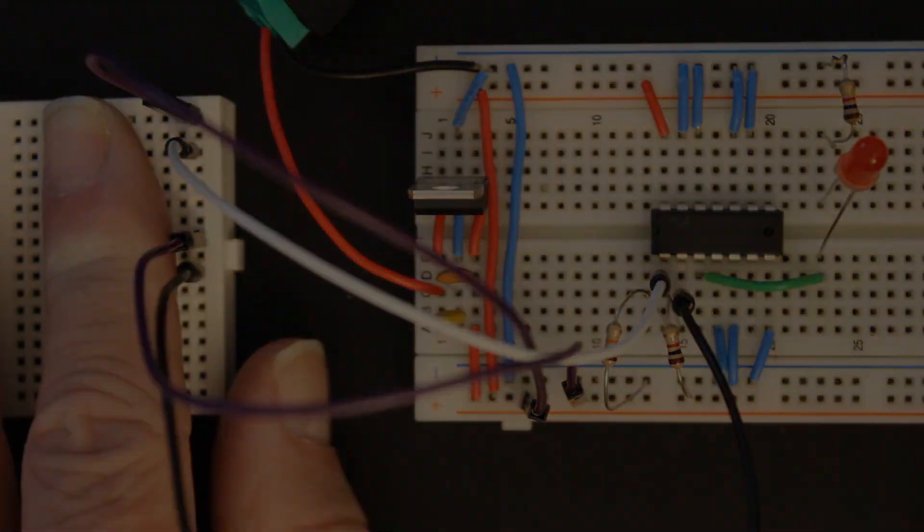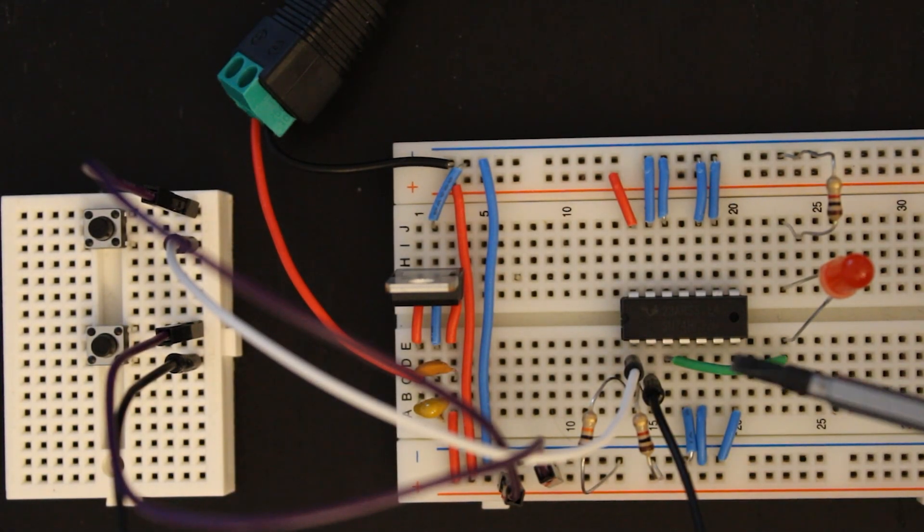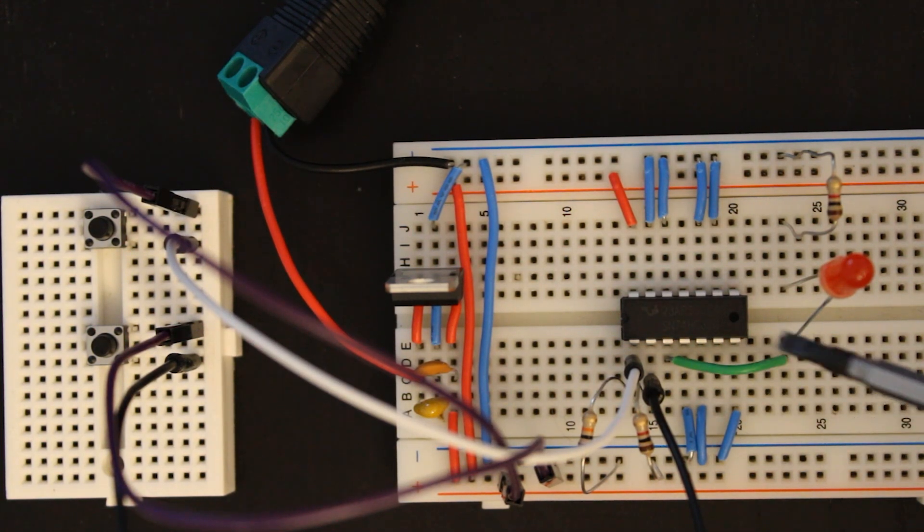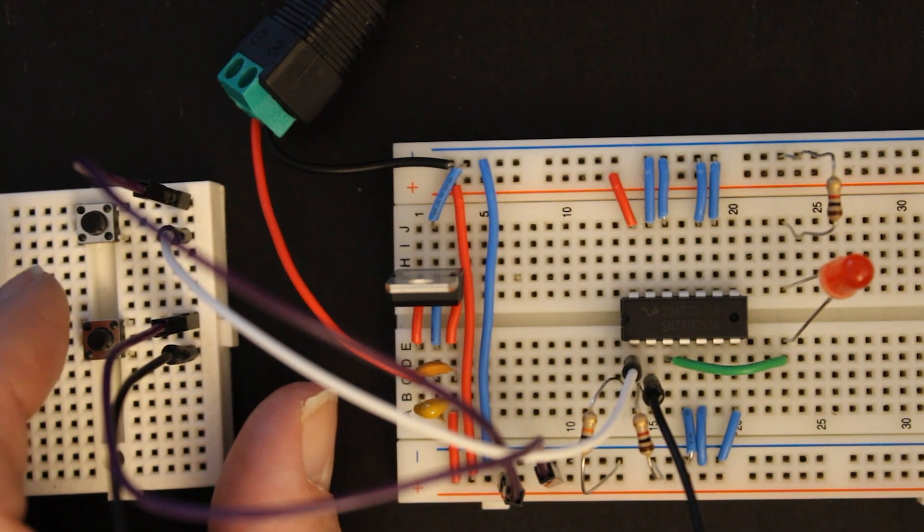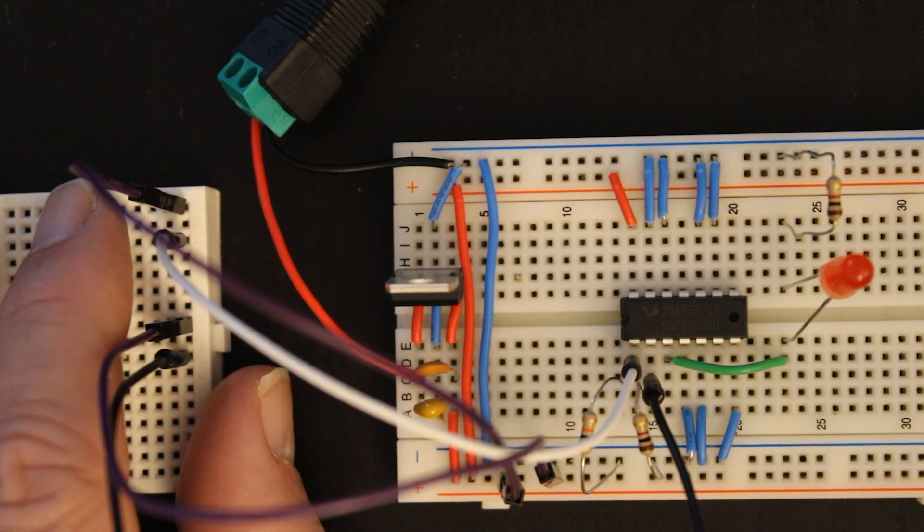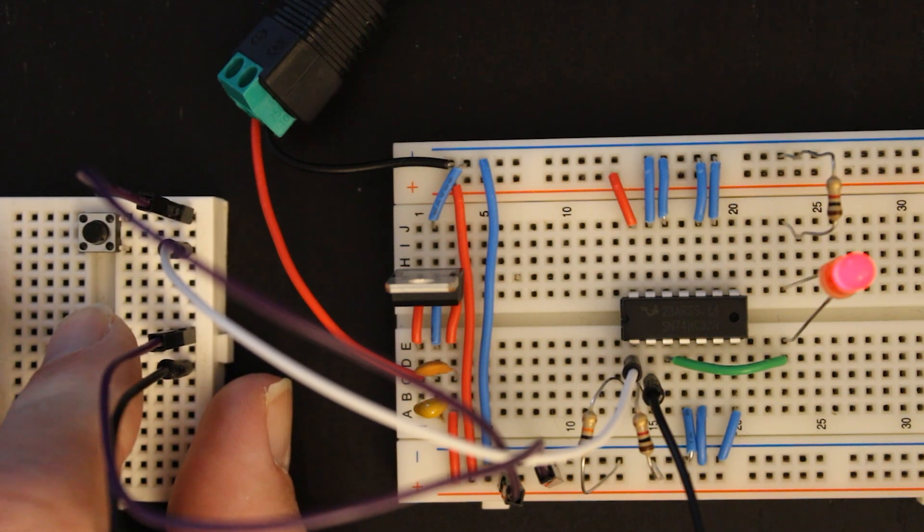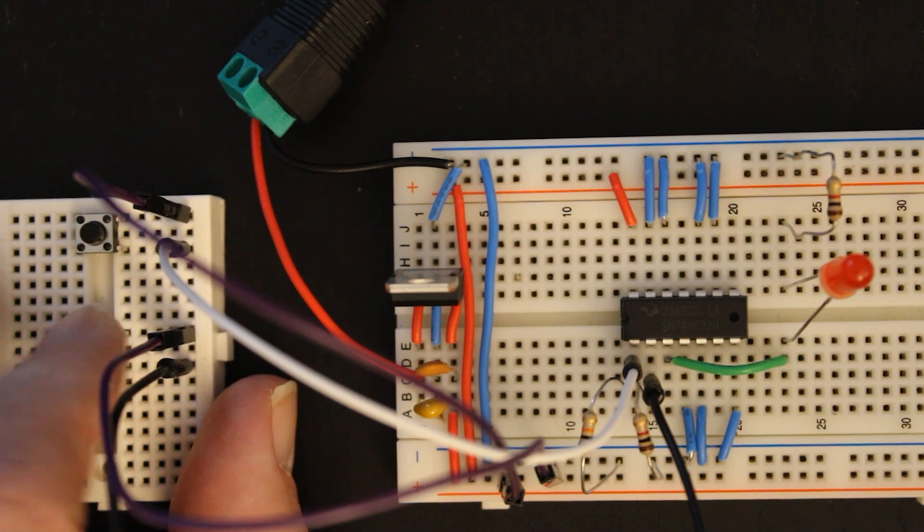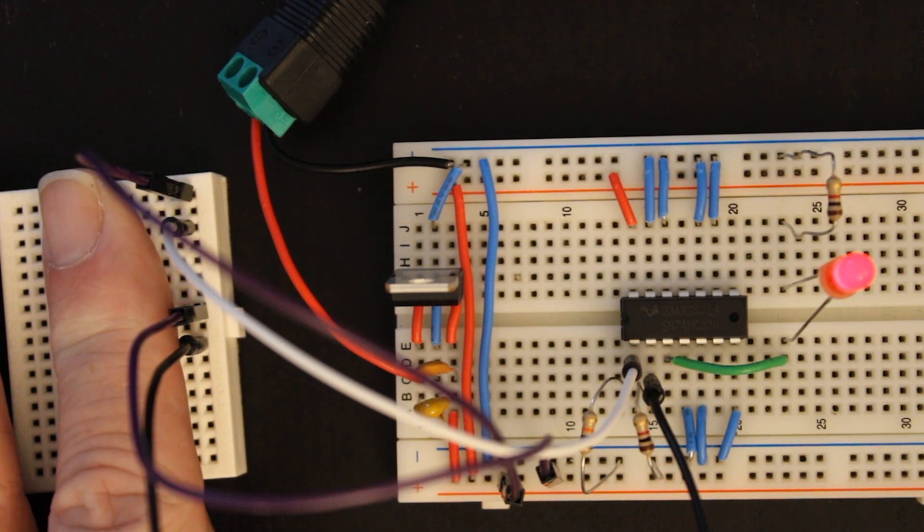So this circuit might look identical, and by and large it is, except for the chip has now been substituted for one that has OR gates rather than AND gates. And in this case you can see that while neither button is pressed we have a low output. But if I press either this button, that gives us a high output, or this button, that gives us a high output. And of course, if we have both of them depressed at the same time, that also gives us a high output.